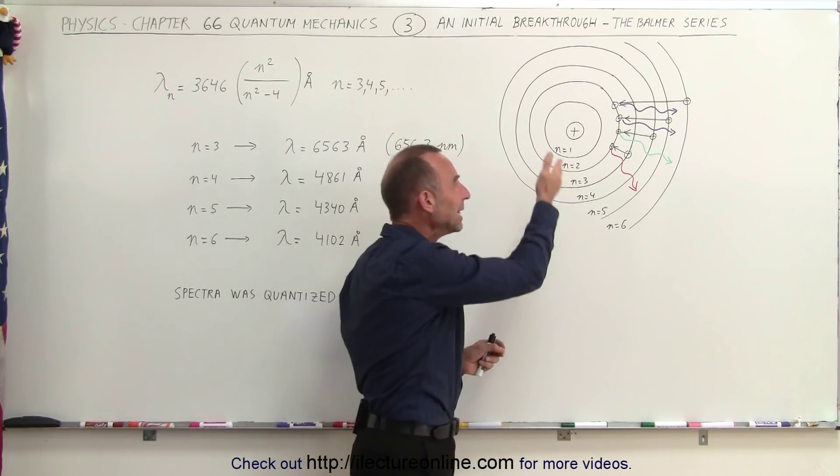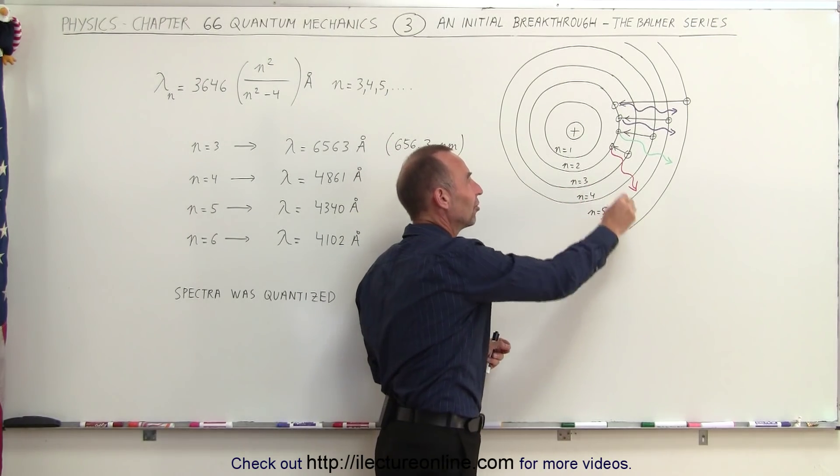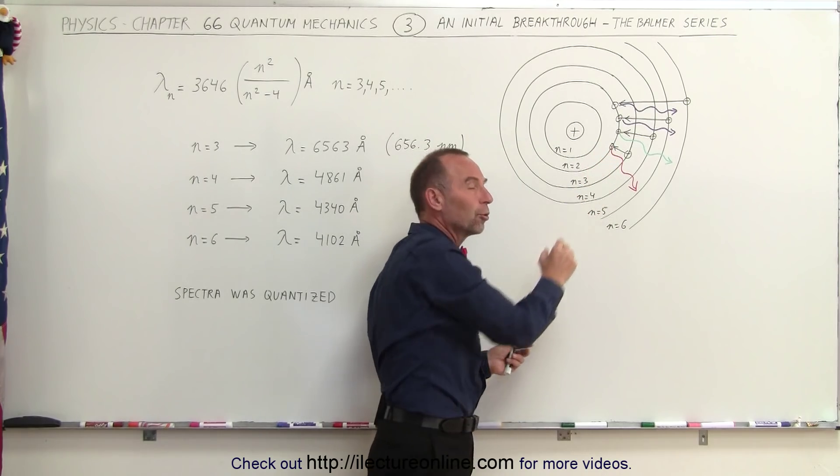They cannot exist in between any of these orbits. They can only exist in orbit number one, orbit number two, orbit number three.